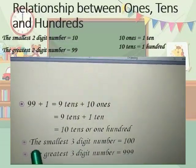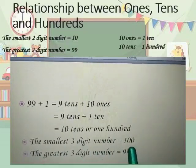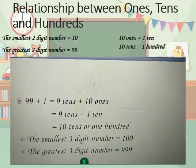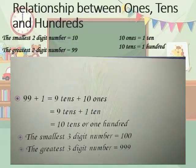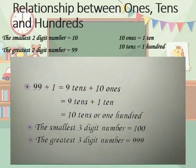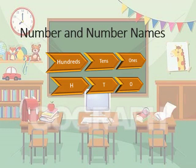Now we have understood that the smallest three digit number is 100 and the greatest three digit number is 999. In a three digit number, the first place from the right is the ones place, the second place is the tens place, and the third place is the hundreds place.